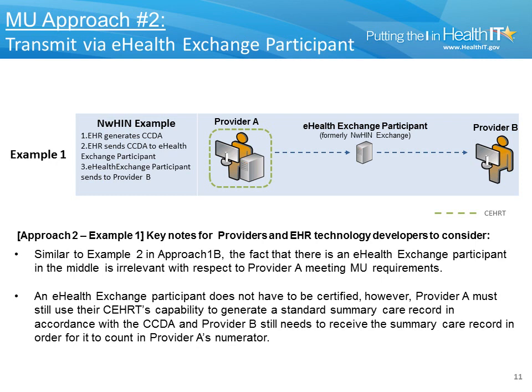MU Approach 2 involves the transmission of a CCDA through an eHealth Exchange participant. There are two important points: first, similar to Approach 1B, the fact that there is an eHealth Exchange participant in the middle is irrelevant with respect to Provider A meeting MU requirements. Second, an eHealth Exchange participant does not have to be certified. However, Provider A must still use their CEHRT's capability to create the CCDA, and Provider B still needs to receive the summary care record in order for it to count in Provider A's numerator.